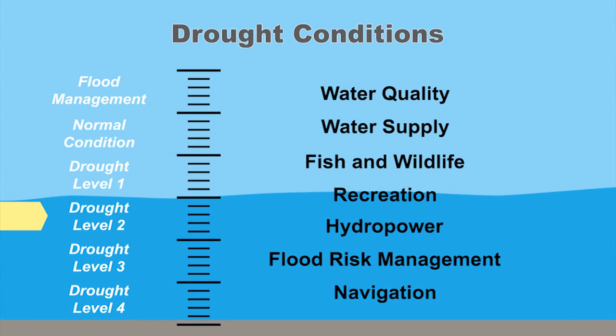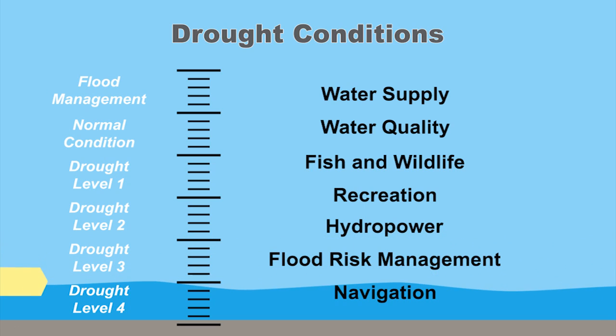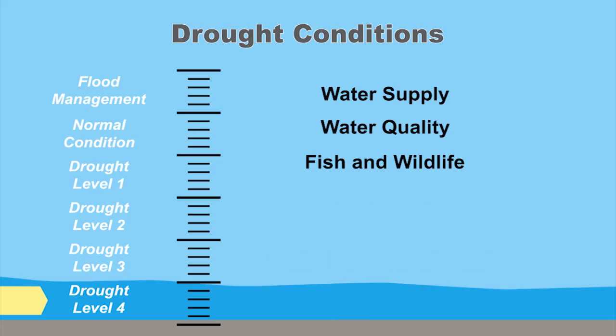Then once you get beyond drought trigger level 2 — between drought trigger level 2 and drought trigger level 3 — you start seeing things change where water quality, water quantity, and fish and wildlife management surface as a focus. And one of the other misunderstandings during drought is that we're flowing the rates to meet downstream requirements, but we're actually using the water efficiently by flowing it through the turbines to generate hydropower.